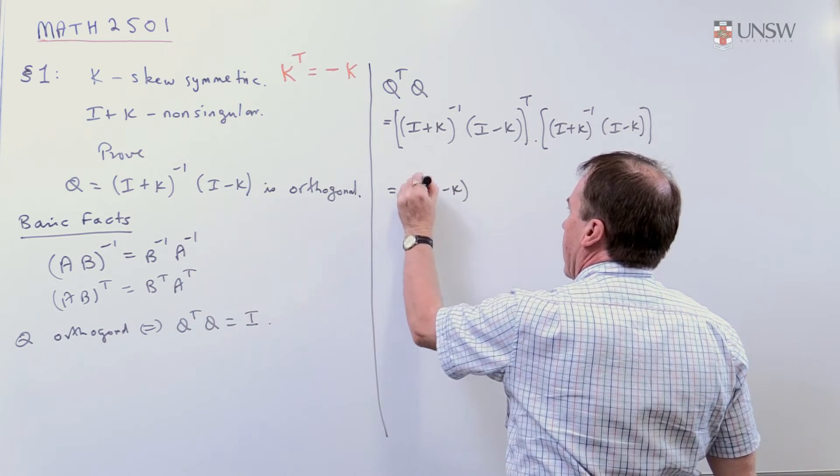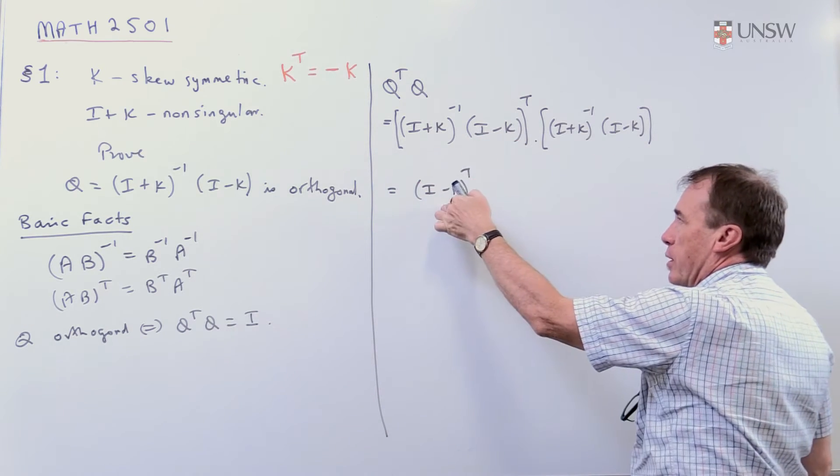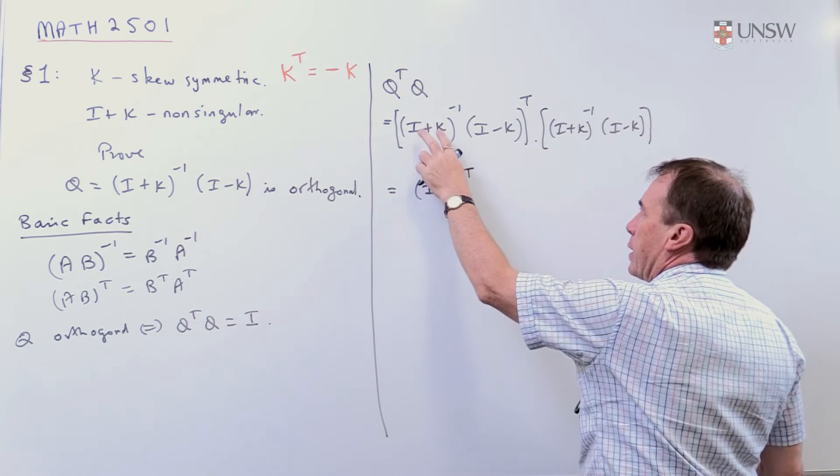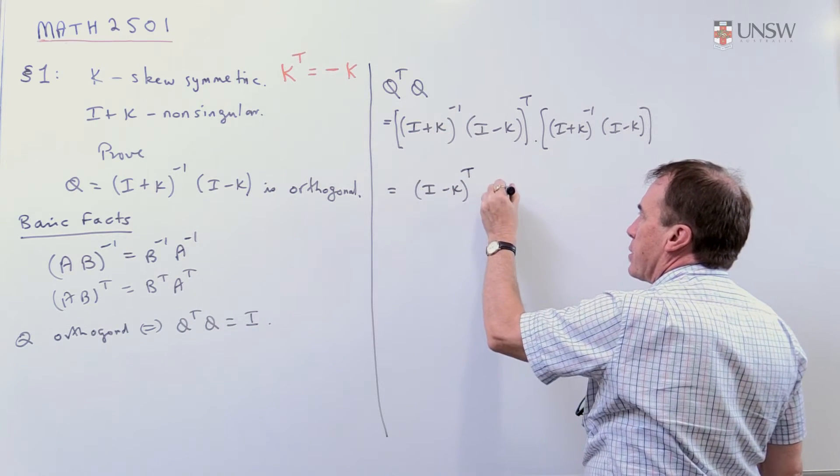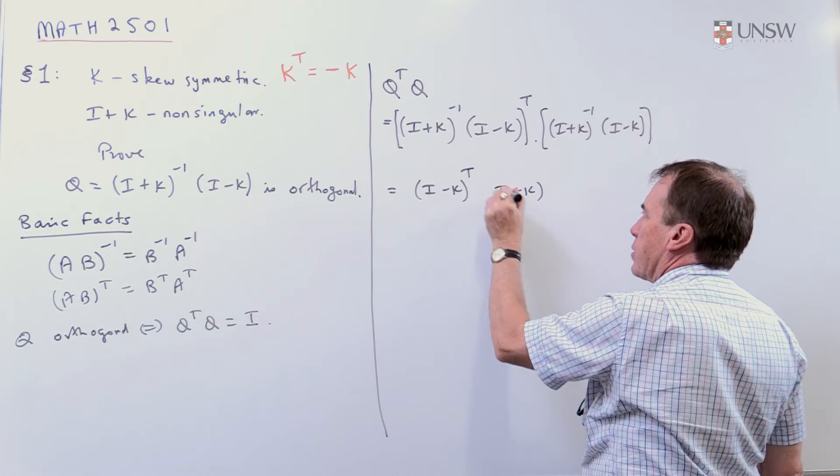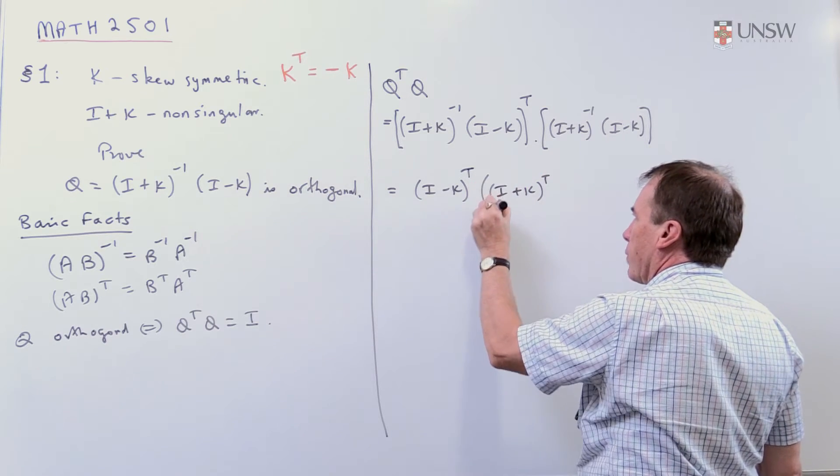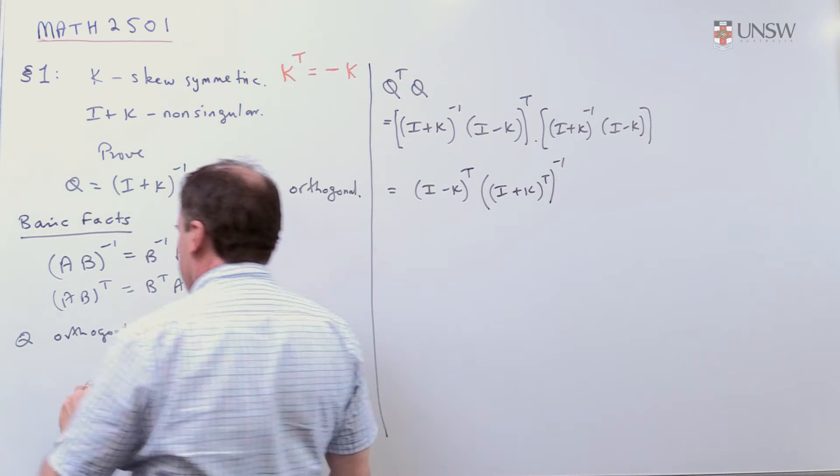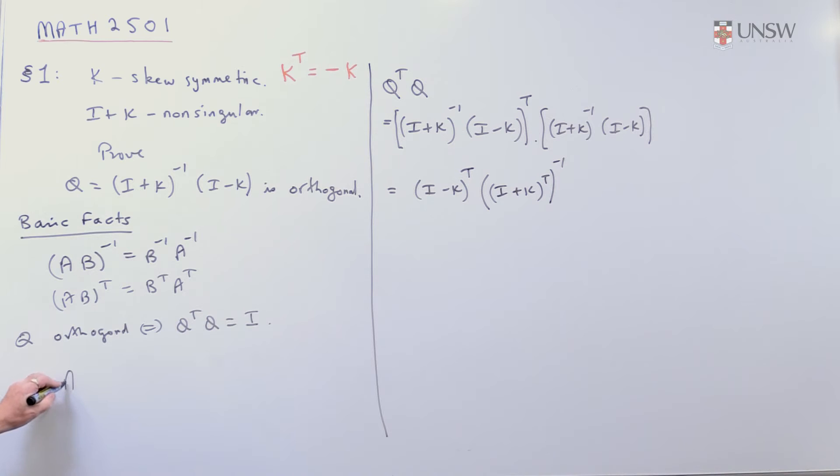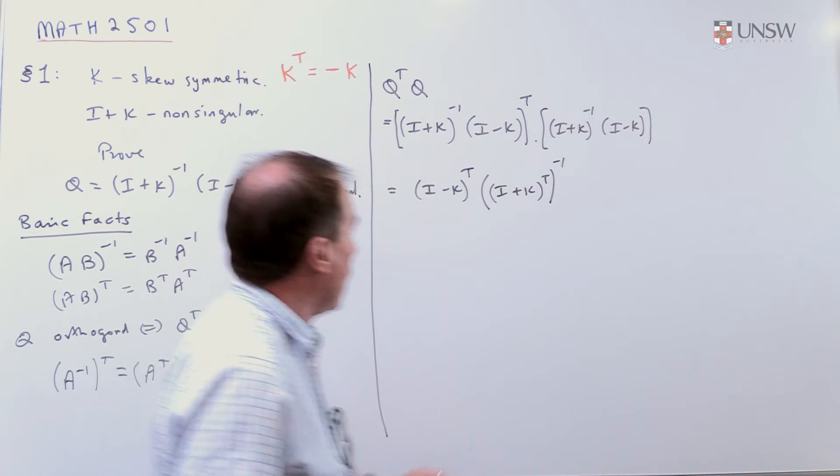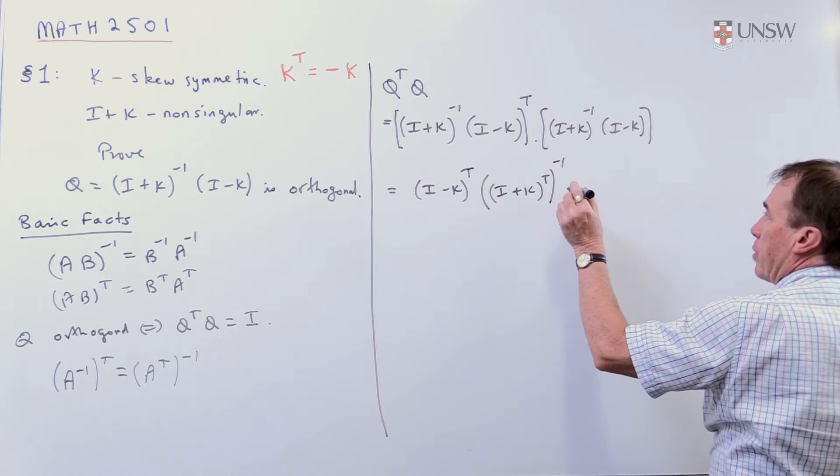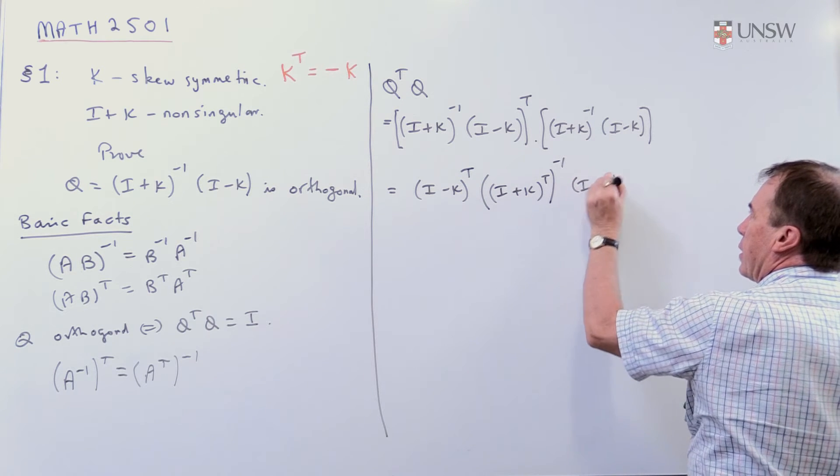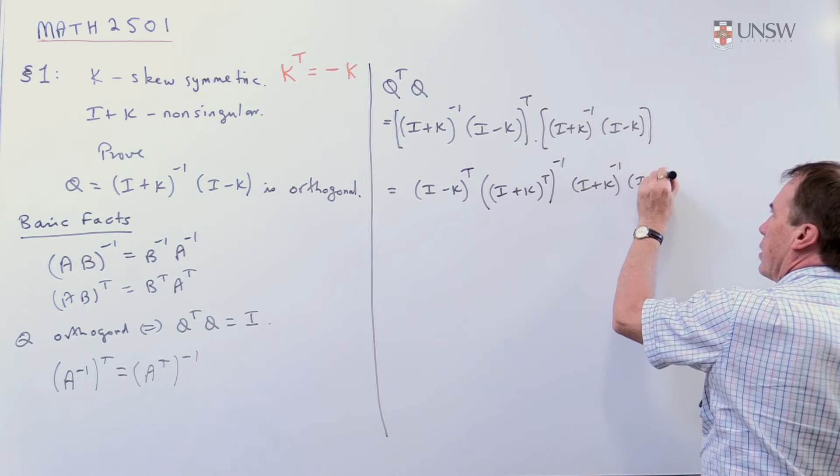So, it's I minus K transpose, that's got to go first. And I'm also going to use the fact that the transpose of the inverse is the inverse of the transpose. So, I just noticed that there. Might I add that to our basic facts here, that A inverse, transpose, is the same as A transpose inverse. This one I can just copy down at the moment. So, this is I plus K inverse times I minus K.